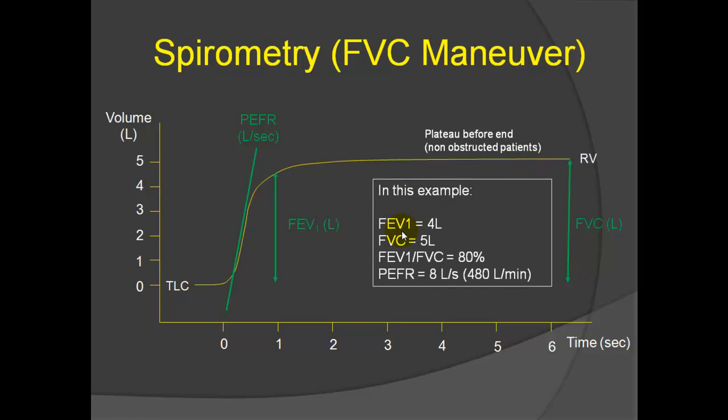In this example, the FEV1 is four liters, the FVC is five liters, the ratio is eighty percent, and the peak flow rate is the slope of this graph. The rise is about eight liters came out per second. Eight per second. We expressed the peak flow in the pulmonary lab in liters per second, but at home on patients peak flow monitors, it's expressed in liters per minute, so this would convert to 480.